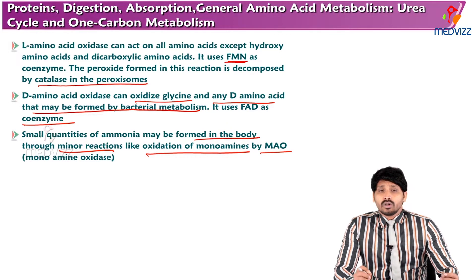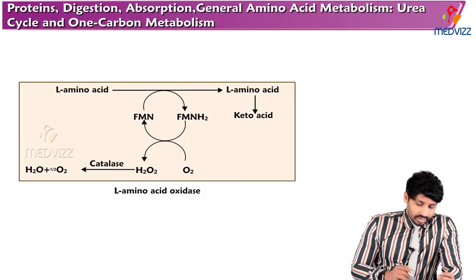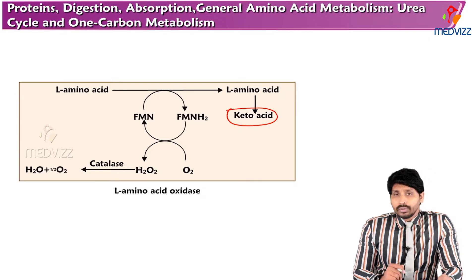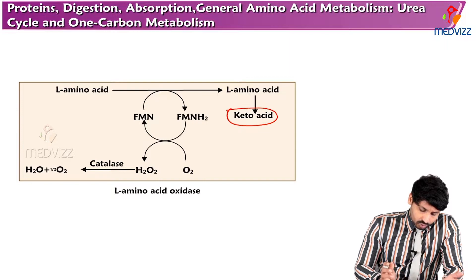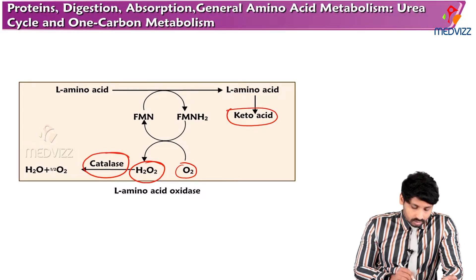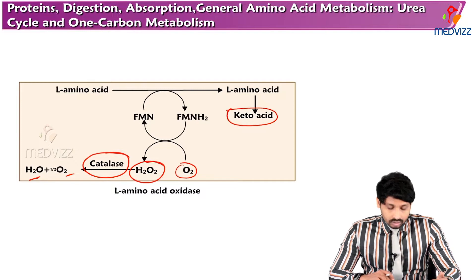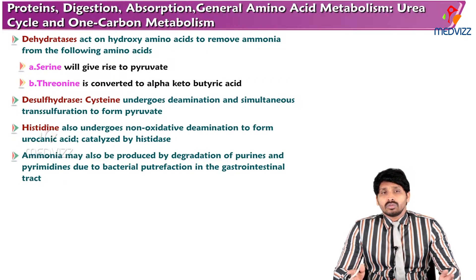Small quantities of ammonia may be formed in the body through minor reactions like oxidation of monoamines by monoamine oxidase. In the L-amino acid oxidase mechanism, the amino acid is converted to a keto acid with involvement of FMN and FMNH2, with oxygen producing hydrogen peroxide, which is then acted upon by catalase present in peroxisomes, converting hydrogen peroxide into O2 and water.